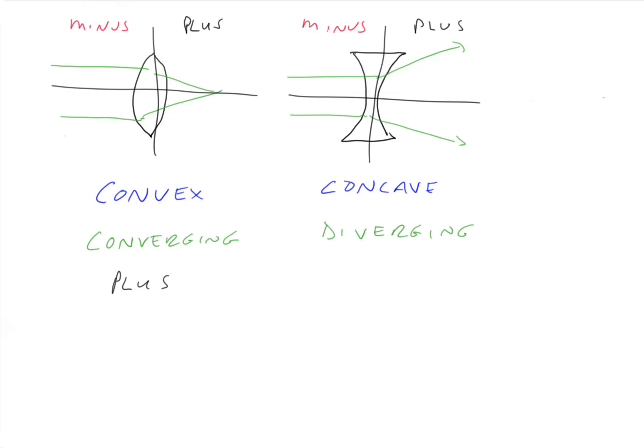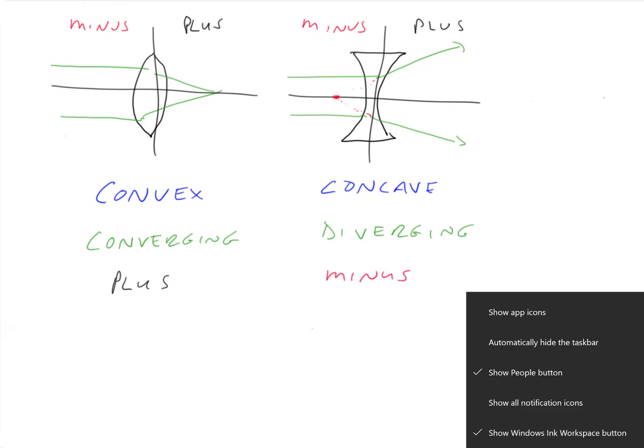This lens on the right, light diverges. It doesn't get focused in real space on the plus side of the lens. But if we follow these lines backwards in a kind of a dotted imaginary fashion, we see that they do come to a point in minus space in virtual space. So this lens on the right is called a minus lens.